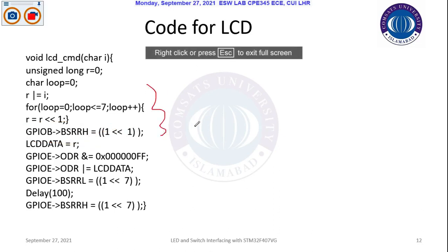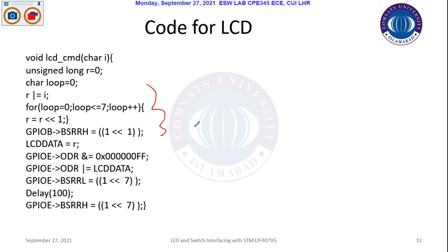There is a loop in which I will shift the values. If you see here, the data lines are from D0 to D7. The data lines are mapped from P8 to P15. Basically, if I have 8 bits of data, I need to shift that data.